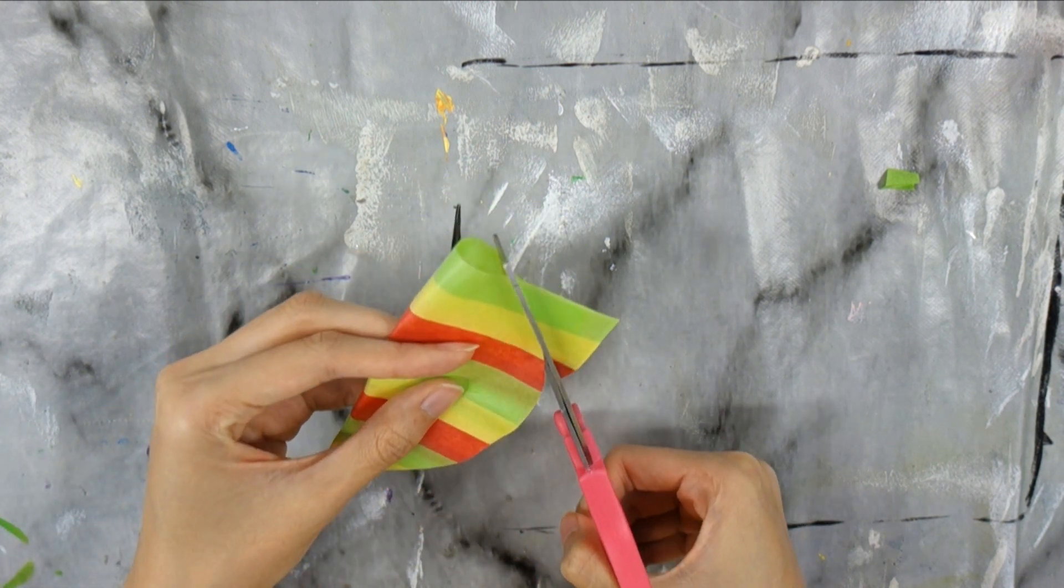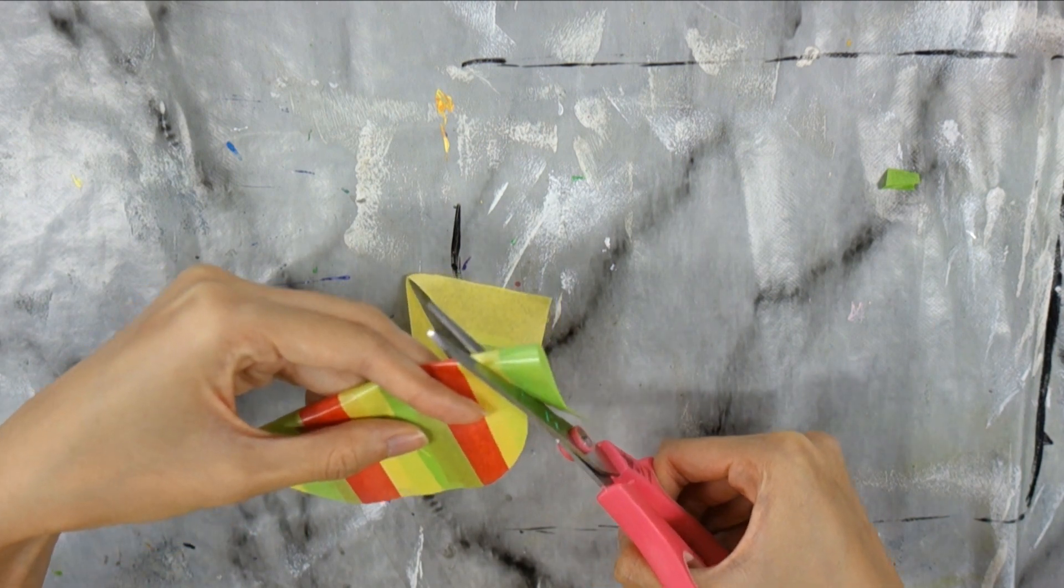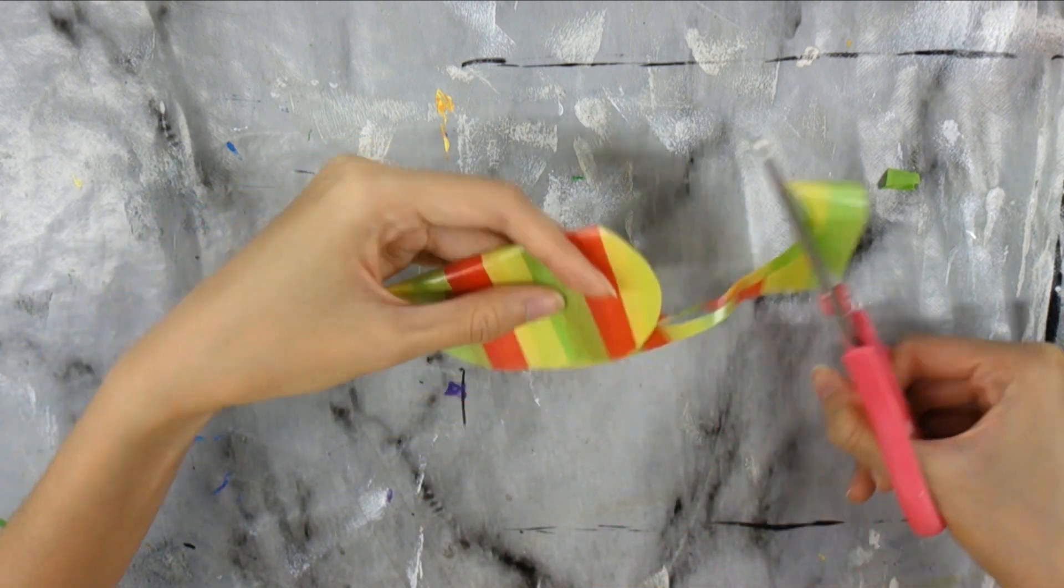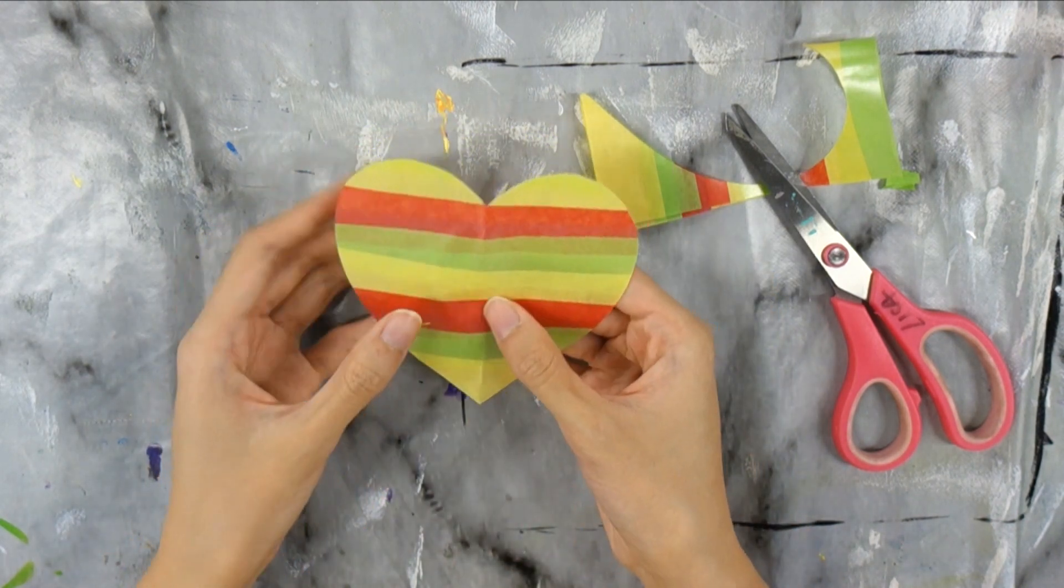If you'd like, you could keep it as a square or cut out different shapes. When you unfold it, you should be left with a nice symmetrical heart.